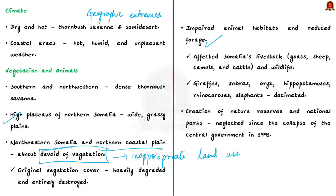Unfortunately, many species of wild animals have been killed in this country — giraffes, zebras, orangutans, hippopotamus, rhinoceros, and above all, elephants have been killed mainly by ivory poachers. Measures to protect endangered species were taken with the creation of natural reserves and national parks, but these areas have been neglected since the collapse of the central government in 1991. These issues have been getting attention after the formation of the new federal government.